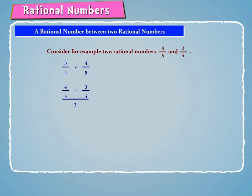We have 4 by 5 plus 3 by 4 by 2 is equal to 16 plus 15 by 20 by 2, is equal to 31 by 20 into 2, is equal to 31 by 40.